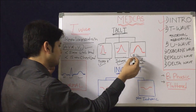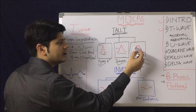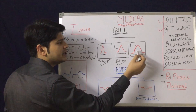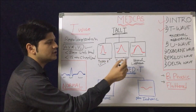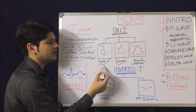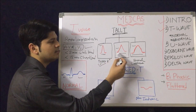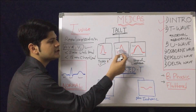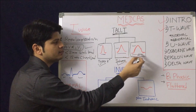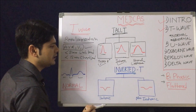A normal variant tall T wave will be broad-based, not pointed — a smooth curve — and asymmetrical. So the variants of tall T wave: hyperkalemia is narrow-based, symmetrical, and pointed; ischemic is broad-based, symmetrical, and slightly pointed; normal variant is non-pointed, broad-based, and asymmetrical. That is about the tall T wave.